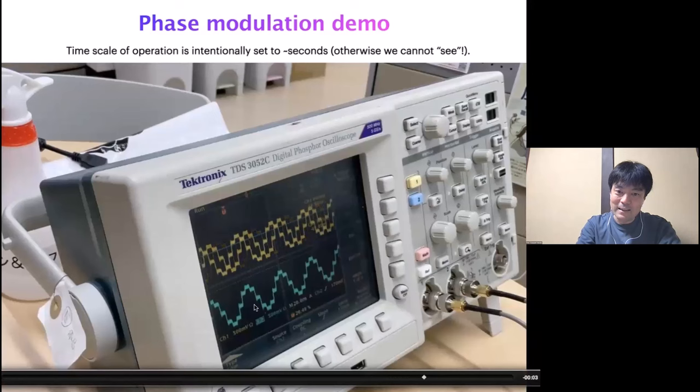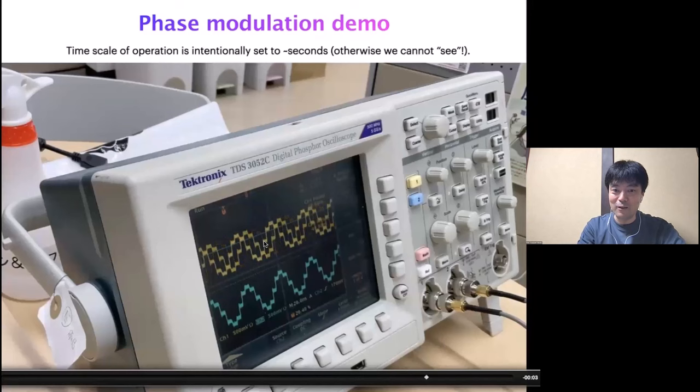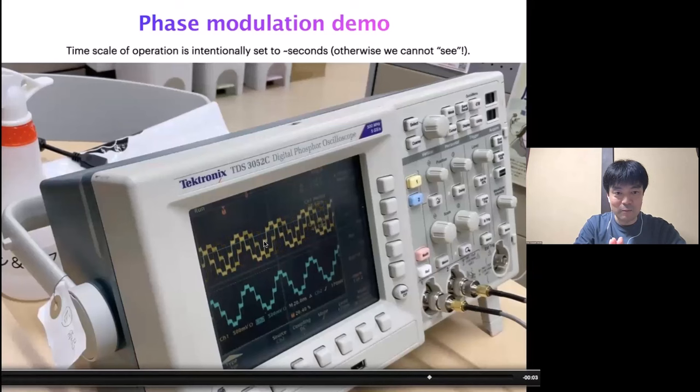We can freely change the phase of the output. In this example, the blue channel has a fixed phase — just continuous oscillation — while we intentionally shifted the phase of the other channel, shown in yellow. The time scale is intentionally elongated to the order of seconds for demonstration; normally for NMR experiments you need to do it on the order of microseconds or even shorter. Our spectrometer achieves a time resolution of around 6 nanoseconds, so for most NMR purposes it works.